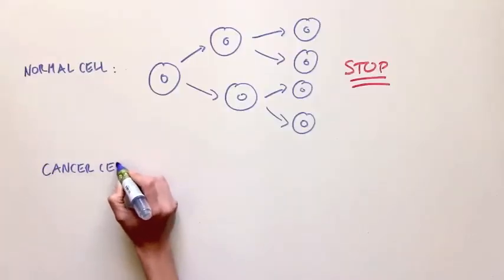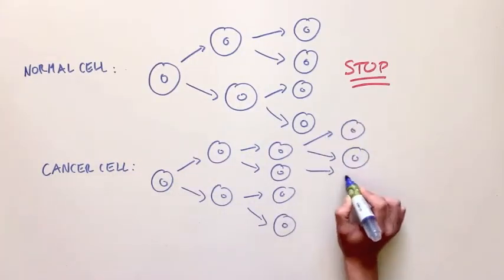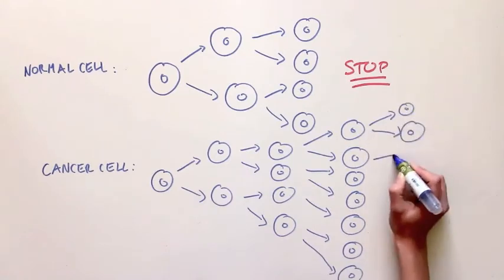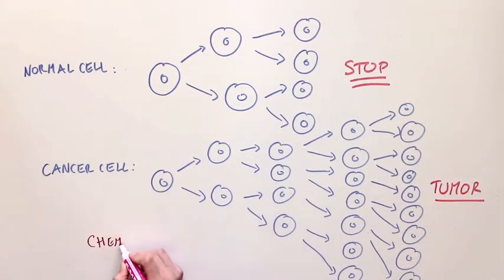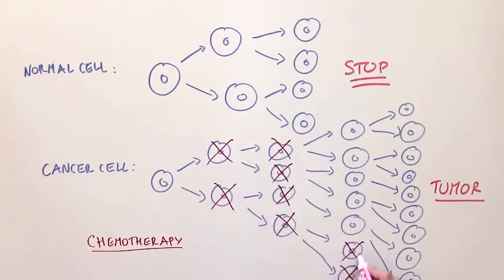Cancer is a condition where cells grow and divide in an uncontrolled way, forming tumors that can be lethal. So what are current mainstream methods for treating cancer? Well, the current method is chemotherapy, which kills all dividing cells regardless of whether or not they have cancer at all.